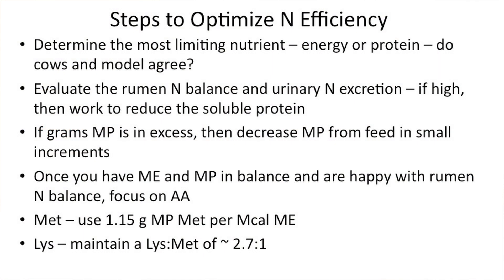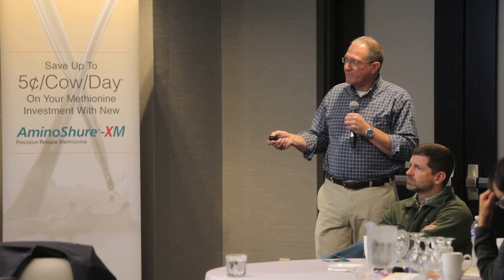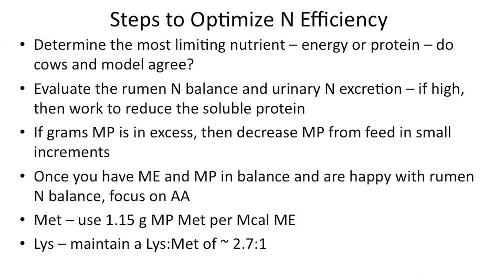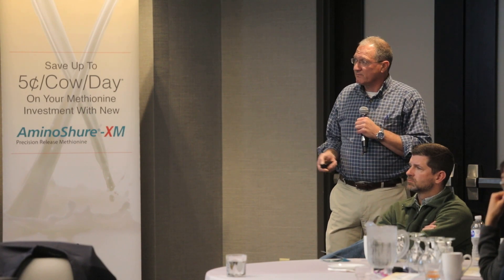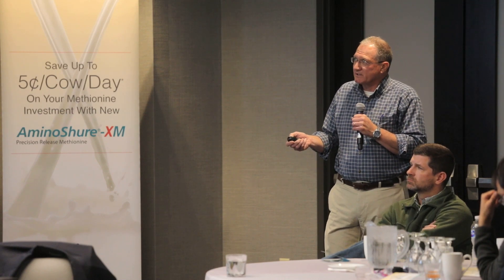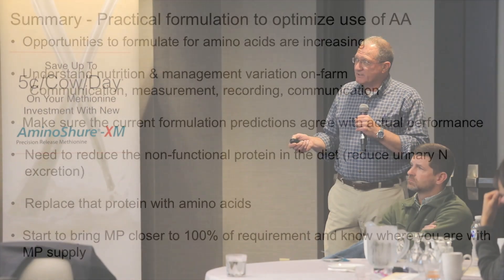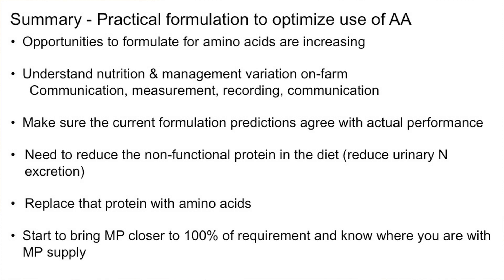Just to wrap up: we've got to determine what's most limiting — is it energy or protein? Do the cows and the model agree? If not, what are you going to change? Evaluate rumen N balance and urinary nitrogen excretion. If it's high, work to reduce soluble protein or total protein. If it's grams of MP in excess, decrease MP from feed in small increments. Once you have ME and MP in balance and you're happy with rumen N, now you can focus on amino acids: 1.15 grams of methionine per Mcal of ME, then follow your lysine ratio. Get rid of the non-functional protein, replace it with amino acids, and operate around 100% of your MP.